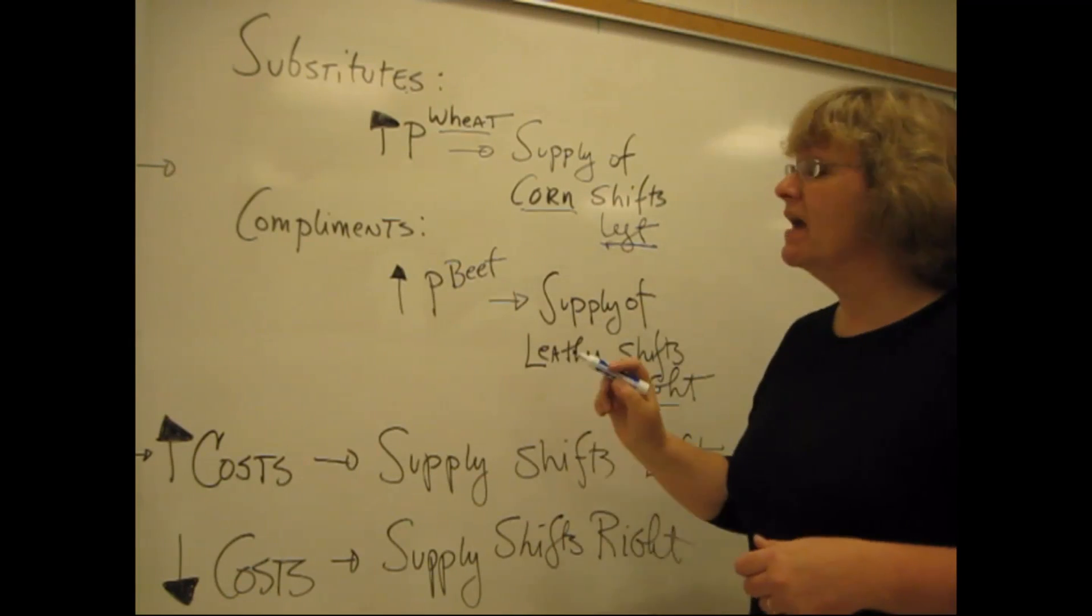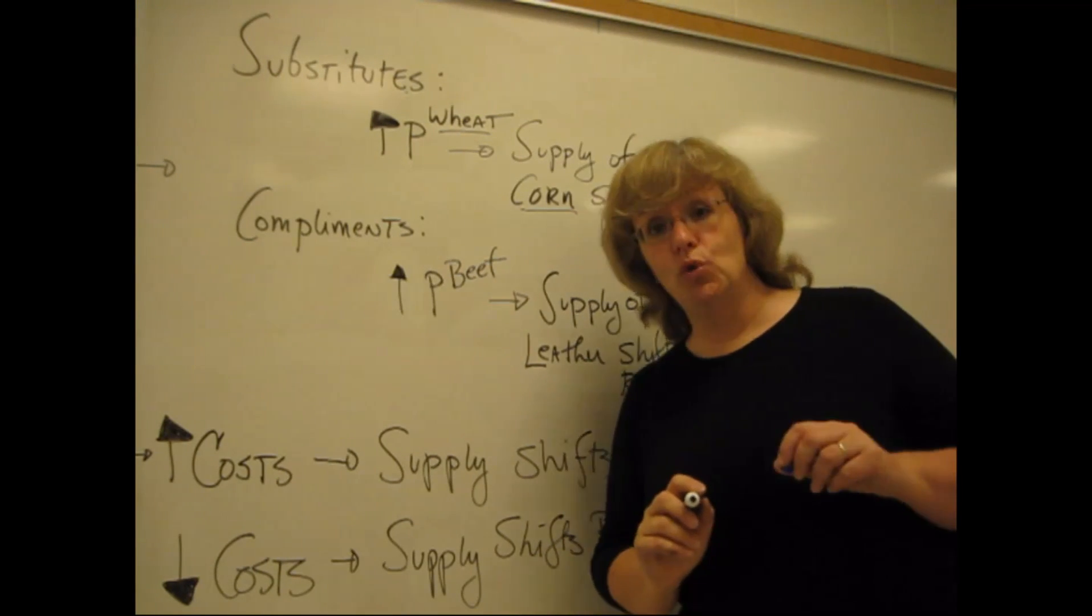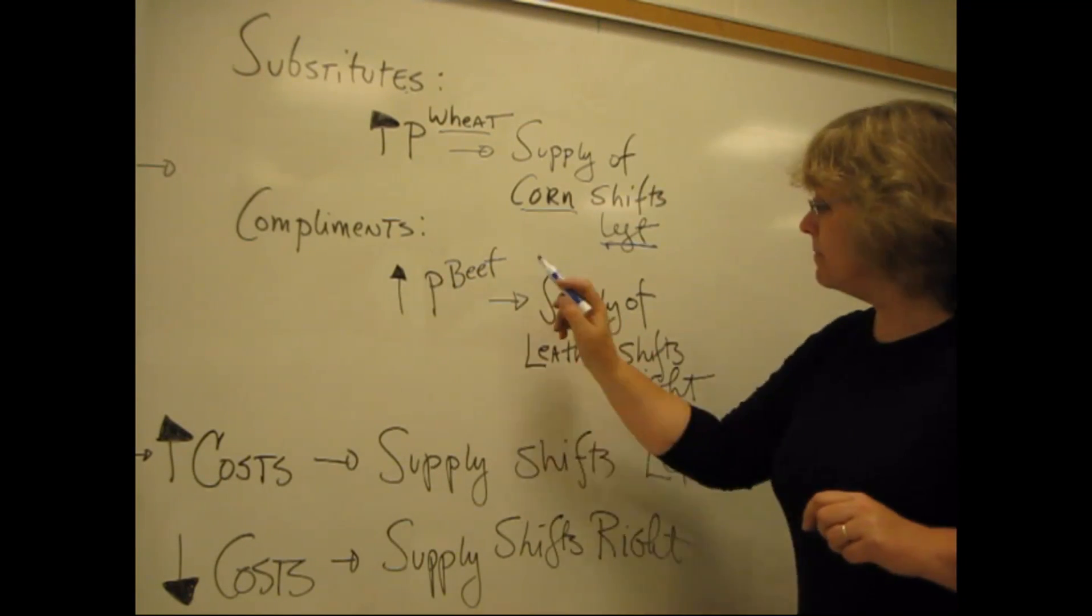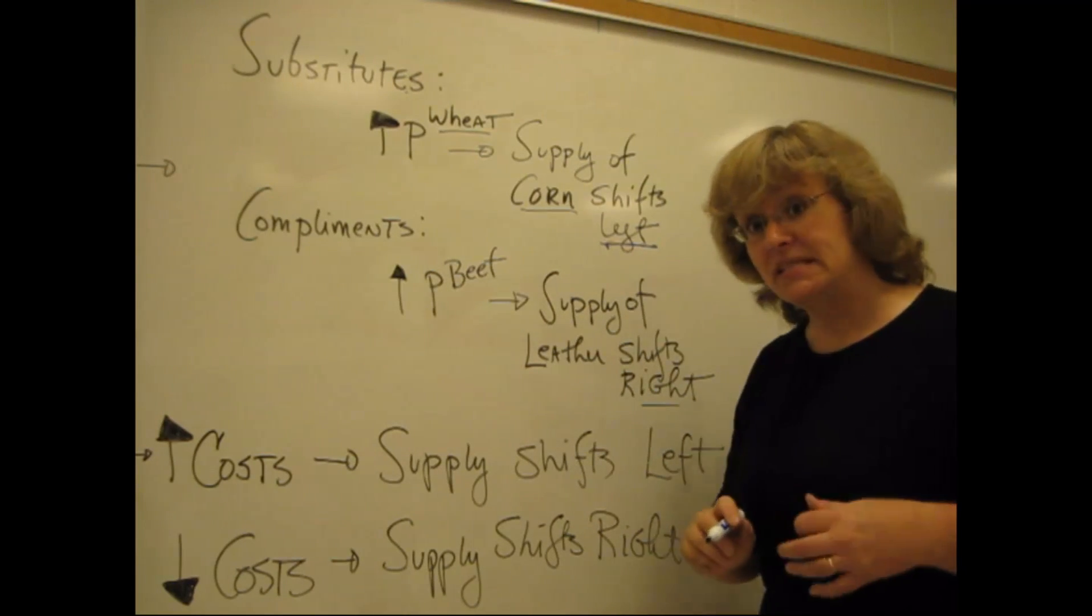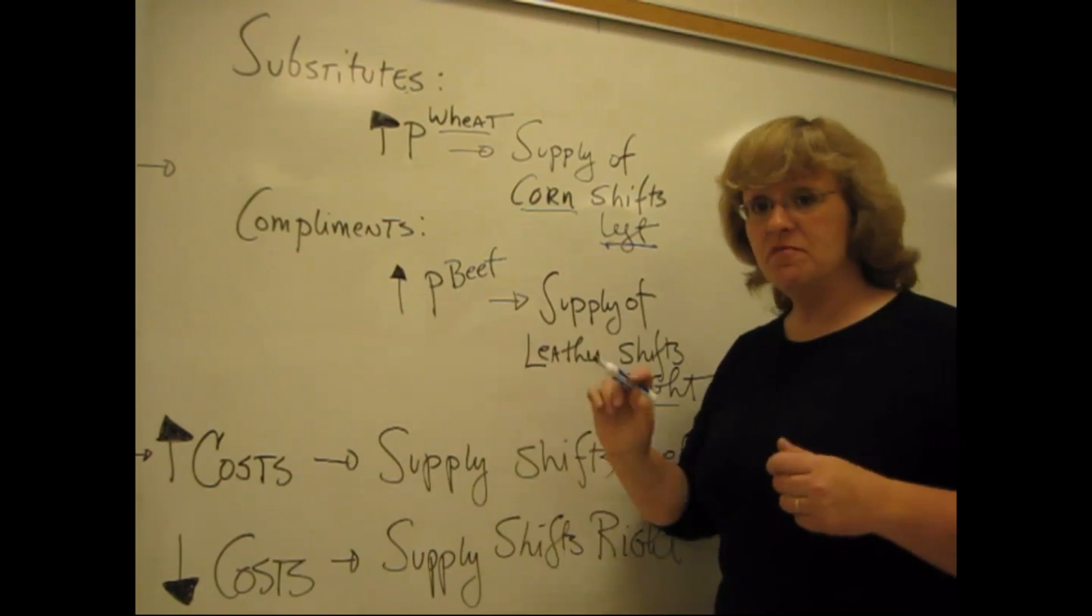Now, complements. Complements are sometimes also called joint products in economics. Beef and leather are complements in supply. If the price of beef is going up, that's going to cause ranchers to kind of look and say, you know,